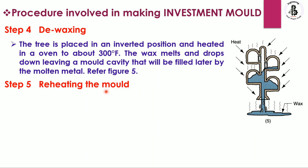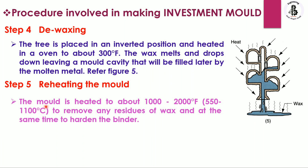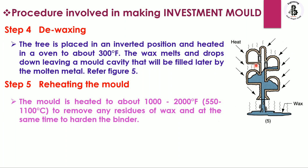After de-waxing, the mold is reheated to about 1000 to 2000 degrees Fahrenheit, or around 550 to 1100 degrees centigrade, to remove any residual wax and to harden the binders. This also increases the strength of the mold cavity made from the wax tree.